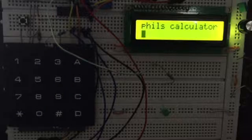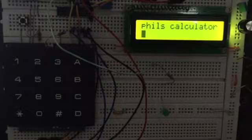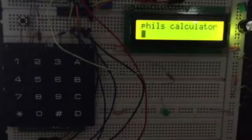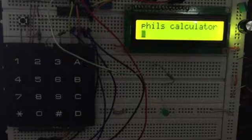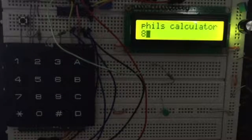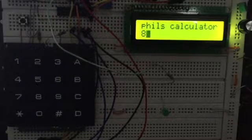So the project basically requires you to enter four key presses. The first key press would be a number from 0 to 9, so I'll enter something like 8 and you can see that come up now on the LCD.